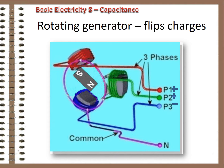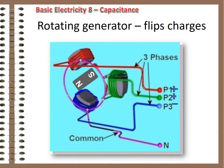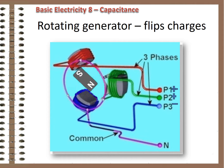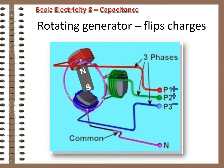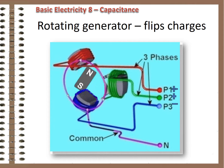In a utility scale generator, an electromagnet is rotating at high speed, its magnetic lines of force separating positive and negative charges in the stationary coils of wire that surround it. As the magnet rotates, the north pole pushes the charges one way and the south pole the other, so every cycle through, the charge on either side of the circuit has to flip back and forth from positive to negative.